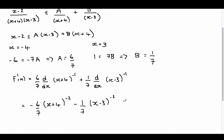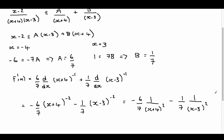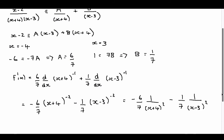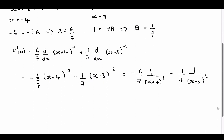So we can write that as minus 6 over 7 times 1 over (x plus 4) squared, minus 1 over 7 times 1 over (x minus 3) squared. That is the first derivative.